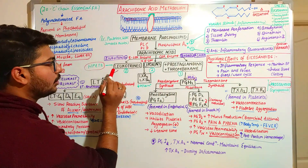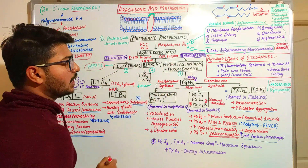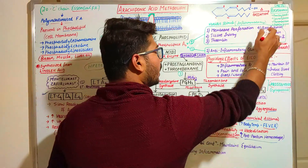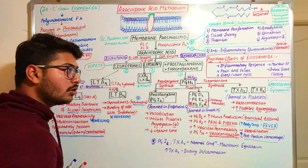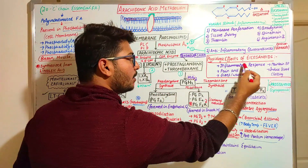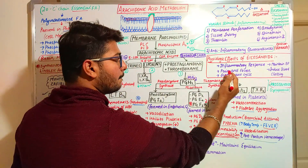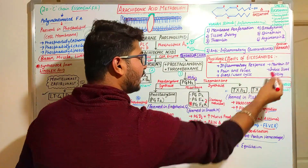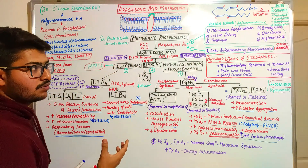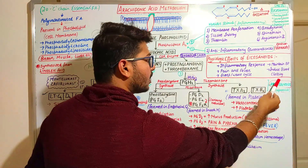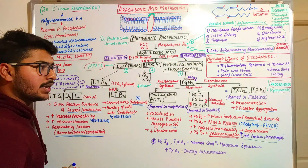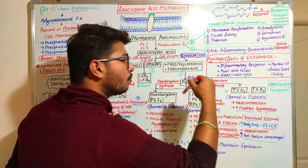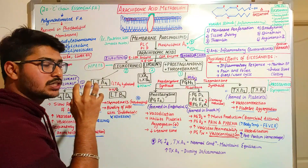Leukotrienes and prostaglandins stimulate inflammation, while lipoxin inhibits it. The physiological effects of eicosanoids include: inflammatory response, pain and fever, sleep-wake cycle, maintaining blood pressure through vasoconstriction and vasodilation, and inducing blood clotting through platelet aggregation. They all modulate these physiological mechanisms.